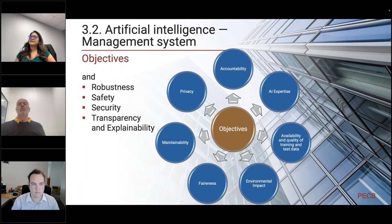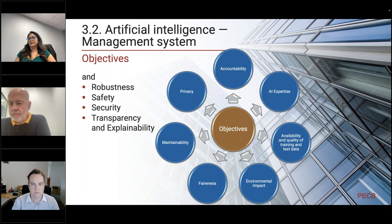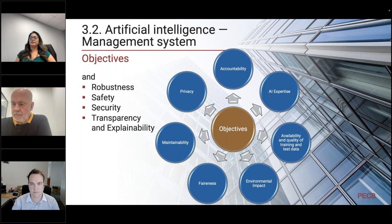As per the ISO 42001 standard, there are around seven objectives of AI. Accountability — developing this kind of tool used internally or by customers requires accountability to be taken into consideration. When talking about AI expertise, there's a myth that it's only about data scientists and data management — but all people involved from the time of use case gathering and understanding what you want as output are very important. How you onboard all these stakeholders on any AI project is very key — you don't leave anyone out.